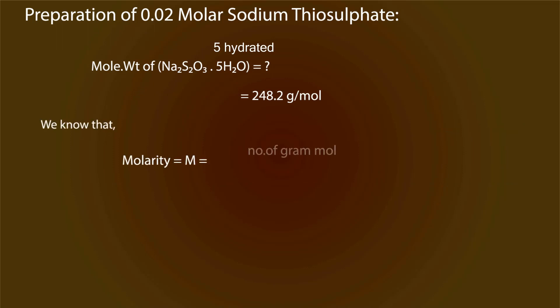We also know that molarity equals number of gram moles divided by volume of solution in dm³, and 1 dm³ equals 1000 milliliters. So 248.2 grams of sodium thiosulfate will be dissolved in 1000 milliliters of water.